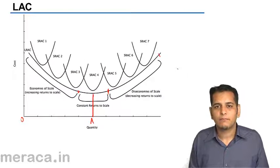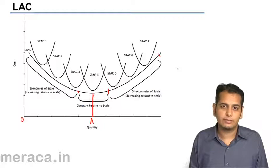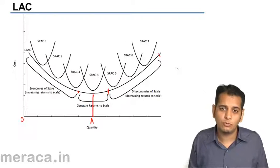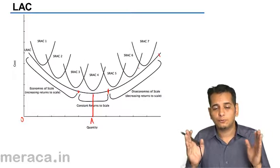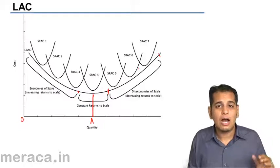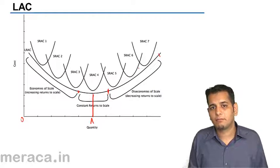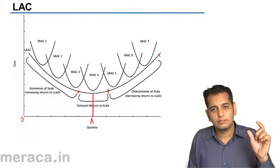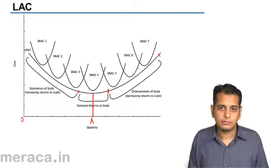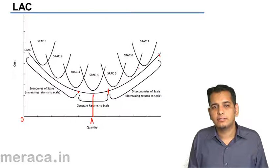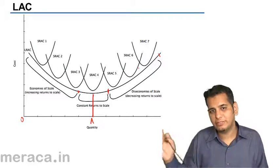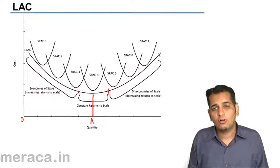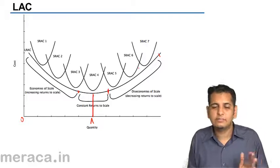For this, the firm also needs to project and predict the amount of output — what quantity of production it might be able to sell in future. Keeping in mind how much the firm needs to produce and how it will produce that, how it will change its production facilities or factory — with the help of these curves, the firm can decide all these things, including how much it should produce and where it should stop, what is the level of production beyond which it should not go.